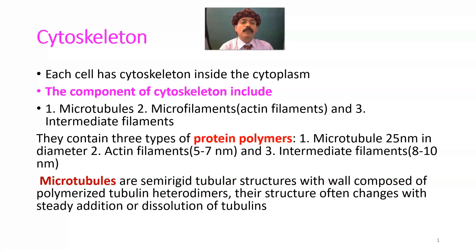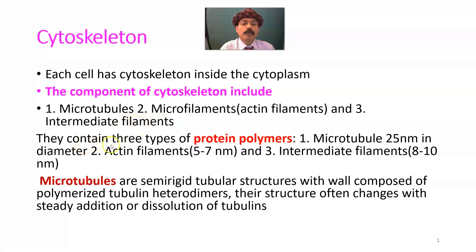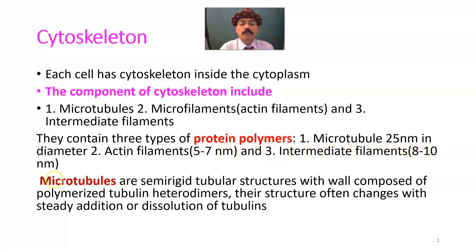Each cell has a cytoskeleton inside the cytoplasm of the cell. The components of the cytoskeleton include microtubules, microfilaments — also called actin filaments or thin filaments — and intermediate filaments. They contain three types of protein polymers: microtubules having 25 nanometers in diameter, actin filaments 5 to 7 nanometers in diameter, and intermediate filaments with 8 to 10 nanometers.